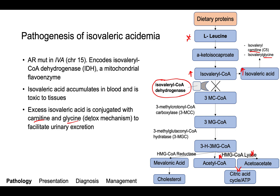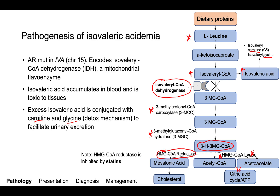The catabolism of L-leucine is an important biochemical pathway that also involves other enzymes which, when defective, can lead to organic acidemias — including 3-MCC and 3-MGC. One particularly interesting compound in this pathway is 3-hydroxy-3-methylglutaryl-CoA, which can be converted to acetyl-CoA and acetoacetate, but also to cholesterol. The first step in cholesterol synthesis is conversion to mevalonic acid by HMG-CoA reductase — the same enzyme inhibited by statins to lower cholesterol.